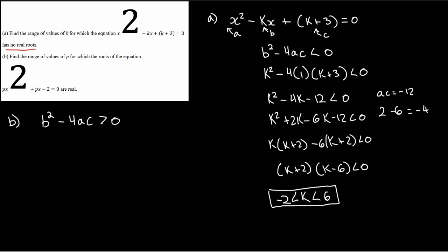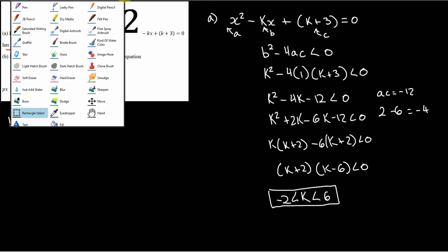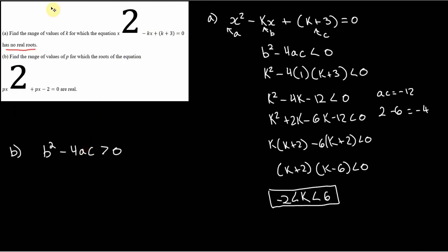And now again, we just need to find the... I'm just going to drag this down and rewrite px squared plus px minus 2 equals 0. So we just need to plug in our values, right? So a, that's b, and that's c.